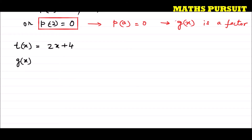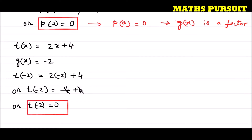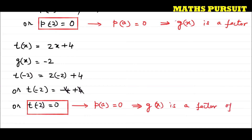The zero of g(x) is −2, which we already found. So we put t(−2) = 2(−2) + 4 = −4 + 4 = 0. Since t(−2) = 0, it satisfied the condition of the factor theorem, that is p(a) = 0, which implies g(x) is a factor of t(x).